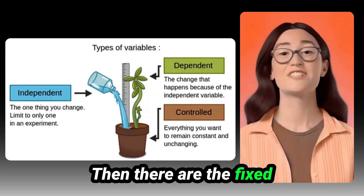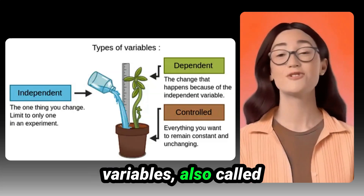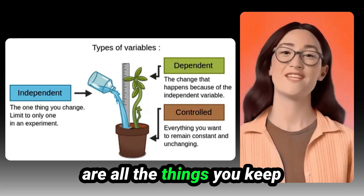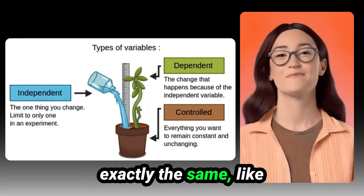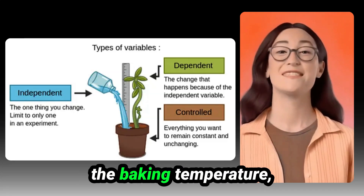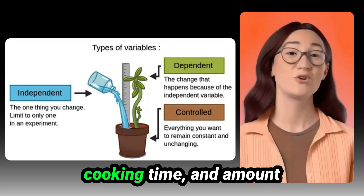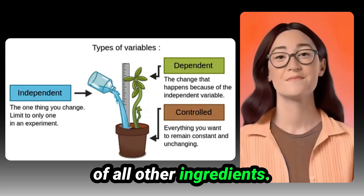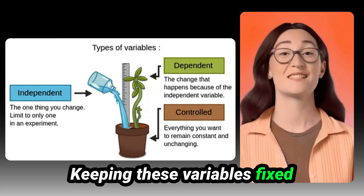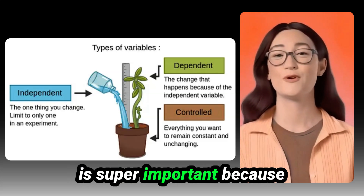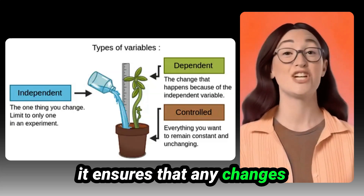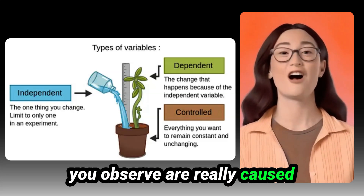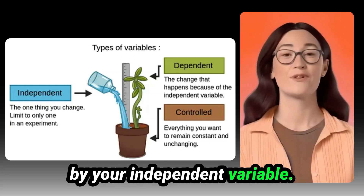Then there are the fixed variables, also called controlled variables. These are all the things you keep exactly the same, like the baking temperature, cooking time, and amount of all other ingredients. Keeping these variables fixed is super important because it ensures that any changes you observe are really caused by your independent variable.